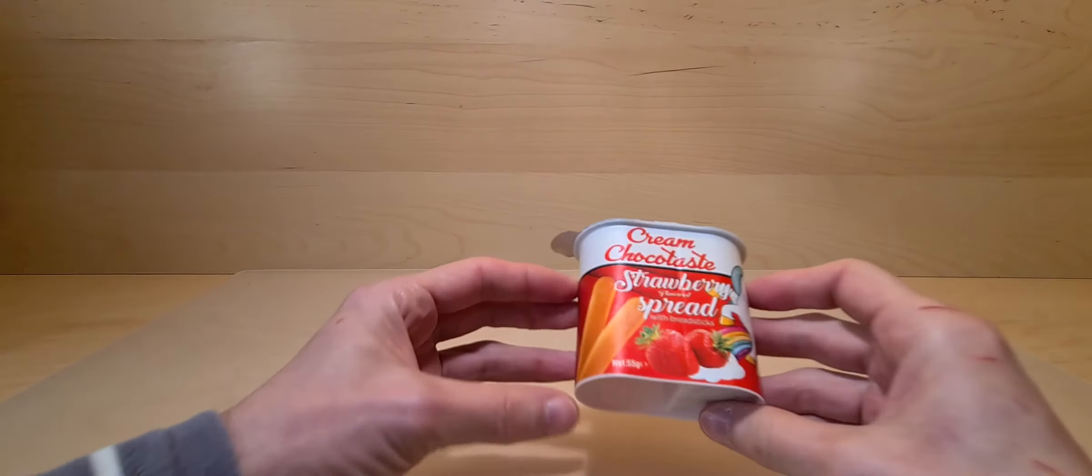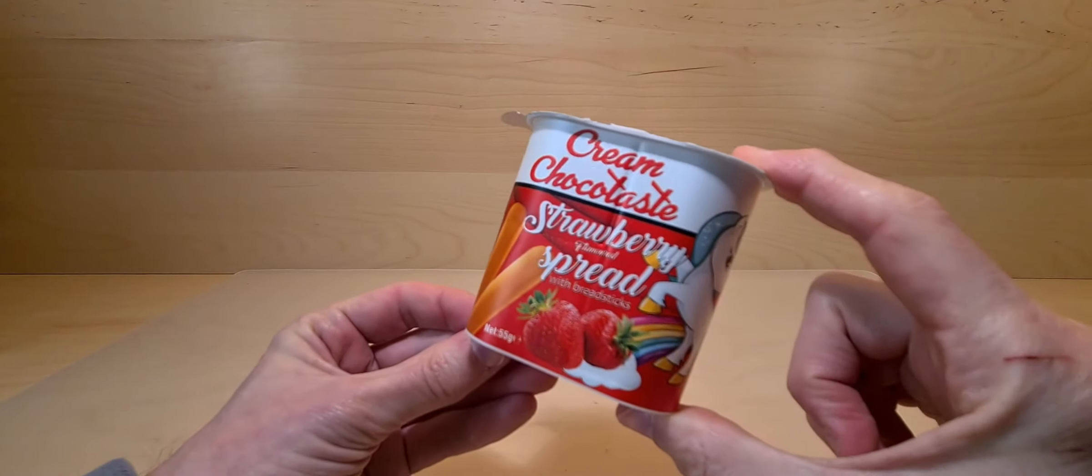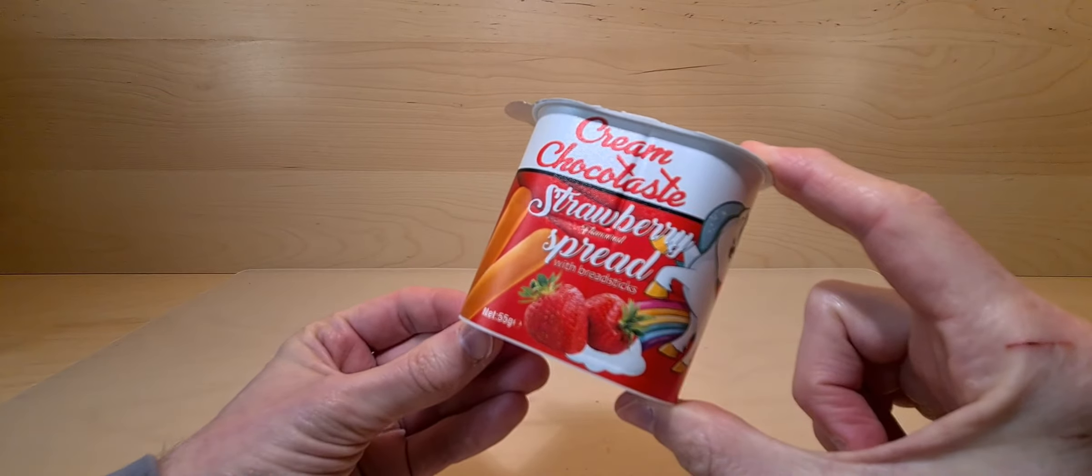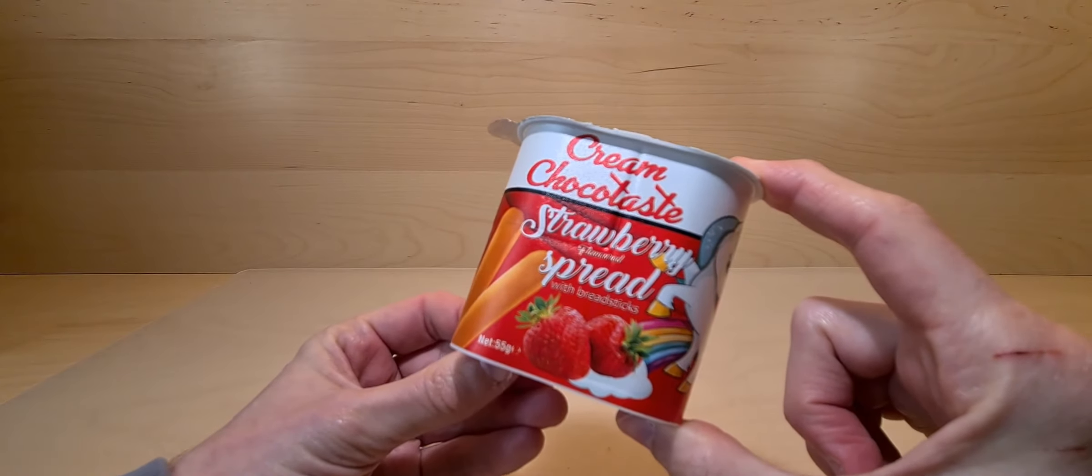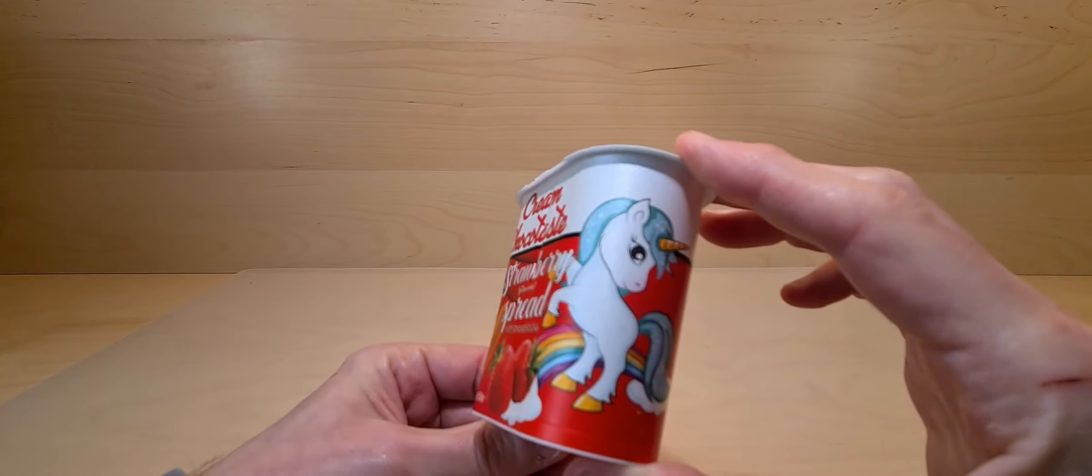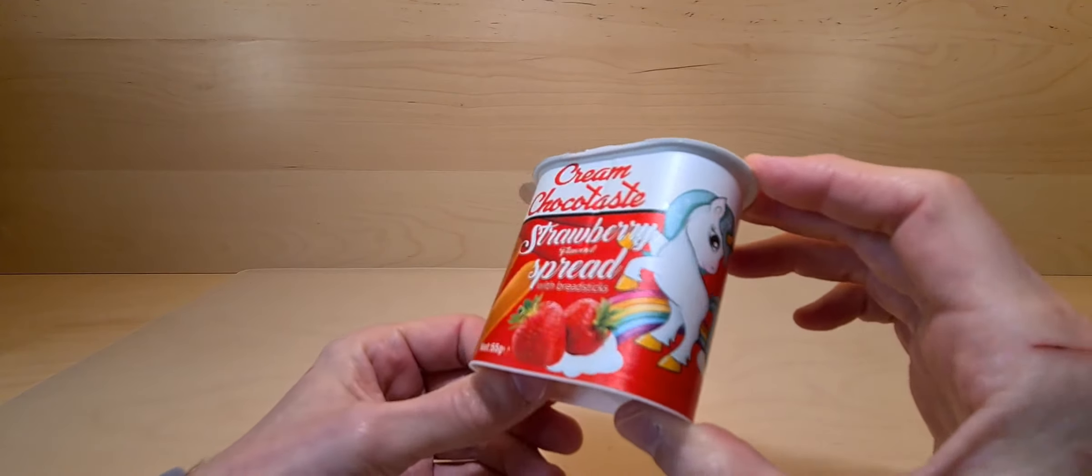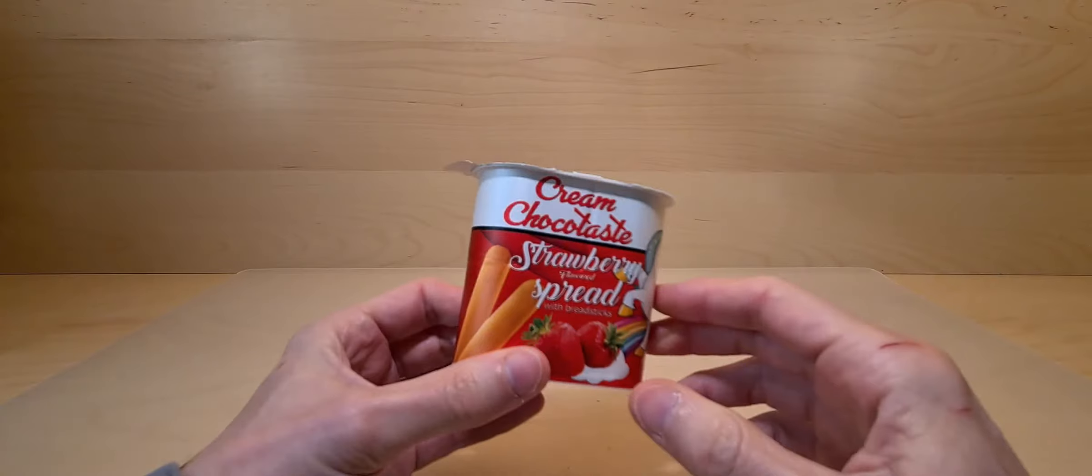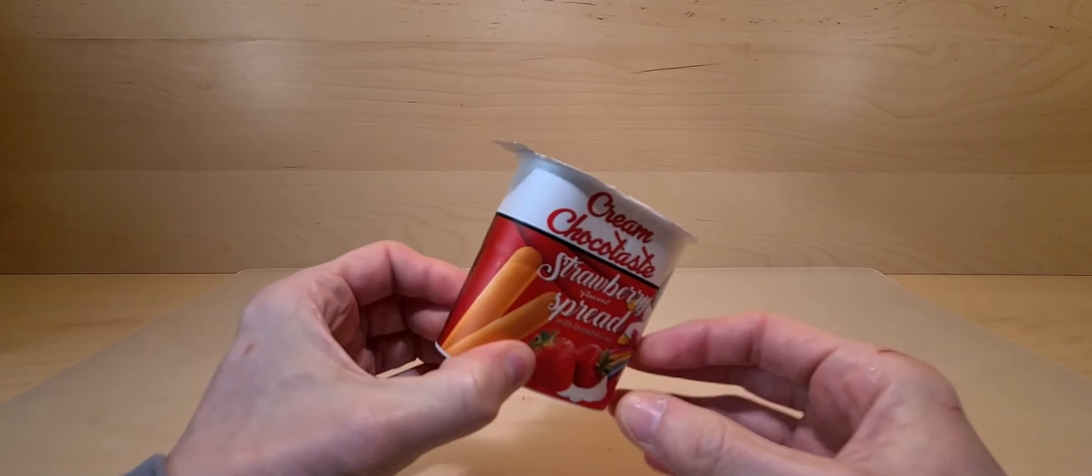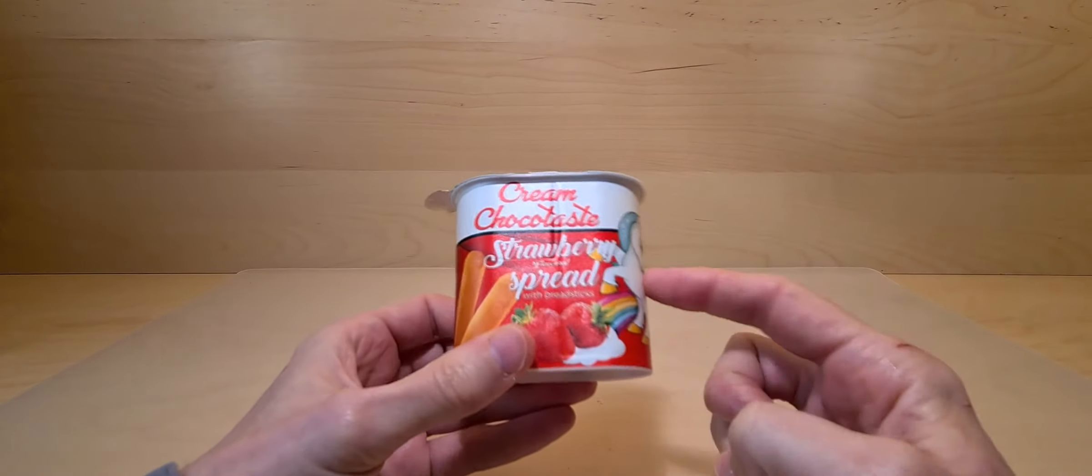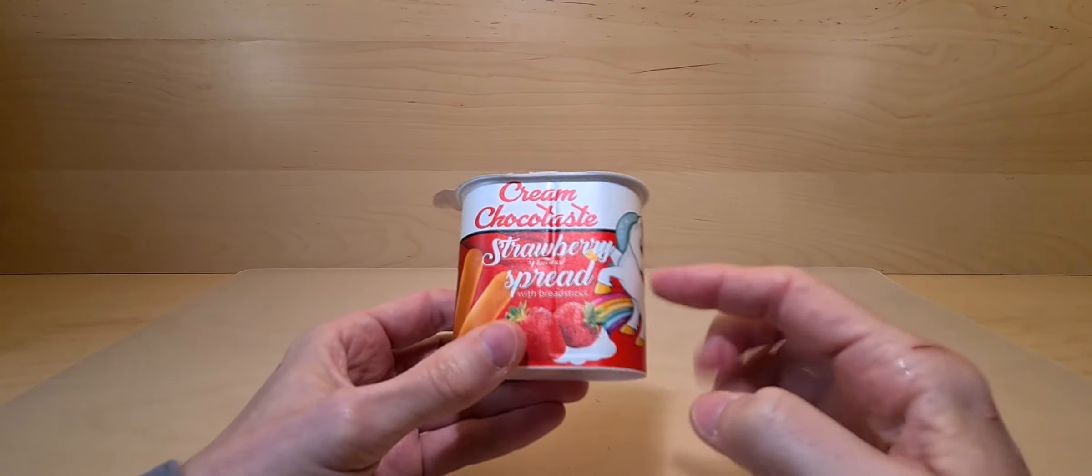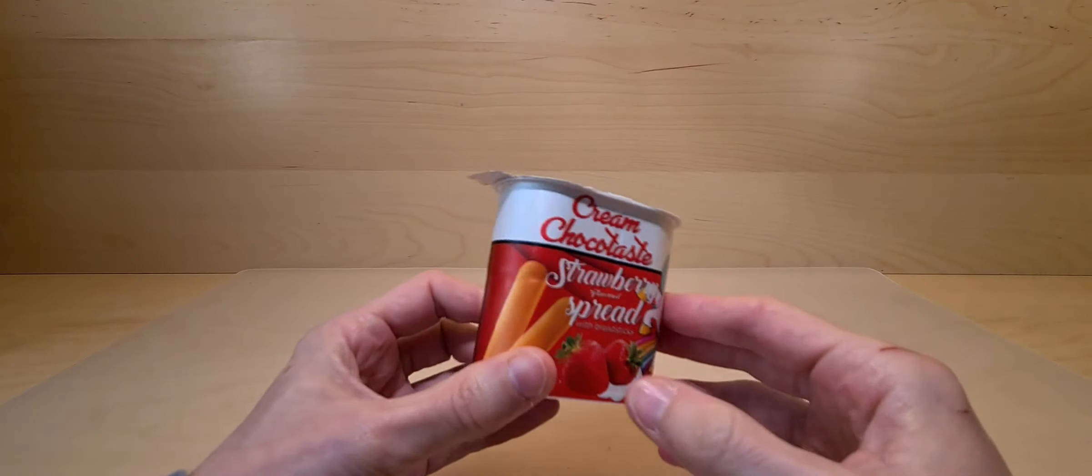Yes, it is rather small. This is Cream Choco Taste strawberry flavored spread with breadsticks, with extra unicorn on rainbows. This came from Pound Stretcher, and I did try the chocolate variant a while ago.